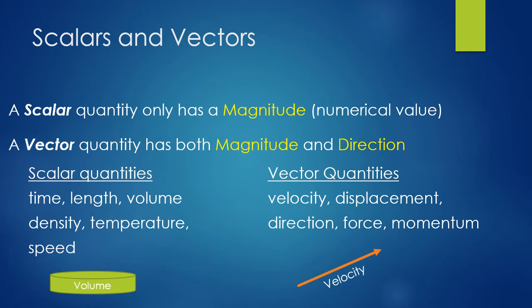Let's look at scalar and vectors. A scalar quantity only has a magnitude — a numerical value associated with it. An example is time: it's 2:30 PM, but it doesn't have a direction. Time moves forward, but it doesn't move north, east, south, west, right, or left.